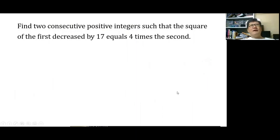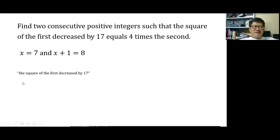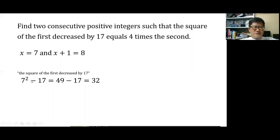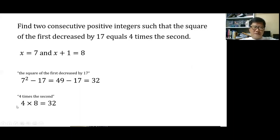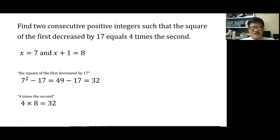Check: the square of the first decreased by 17 is 7 squared minus 17 equals 49 minus 17 equals 32. Four times the second is 4 times 8 equals 32. They are equal, so the answer checks out. The two consecutive positive integers are 7 and 8.